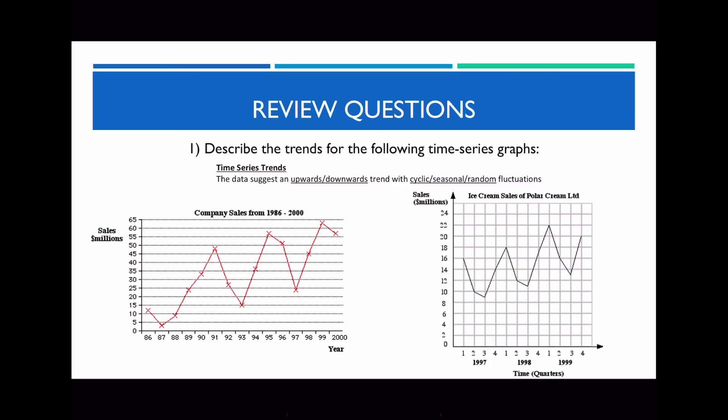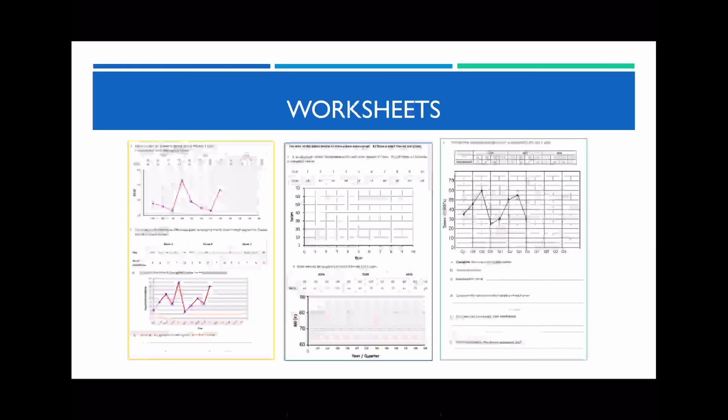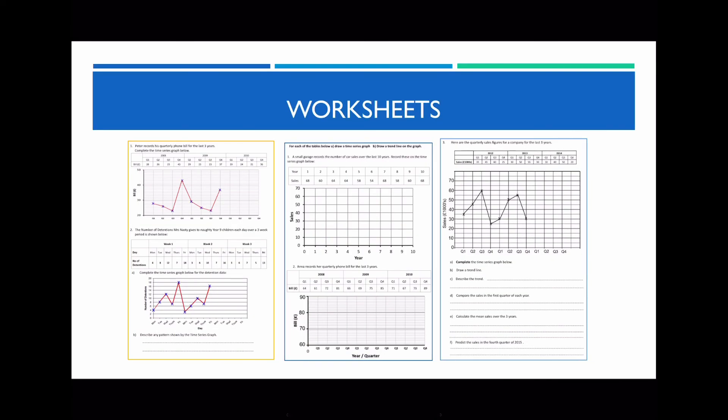This is towards the end of the session. Please answer the two questions in your exercise book, draw the graphs, and use the template to comment on the trends — is it upward, downward, or no trend, and what type of fluctuation is present: cyclic, seasonal, or random? Once you've answered those two questions, work on the three worksheet pages I'll upload. This is the end of today's video. Hopefully you found this video helpful. I'll see you in the next video. Bye.